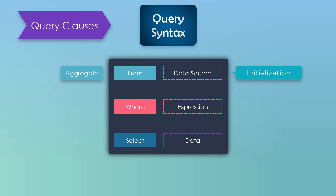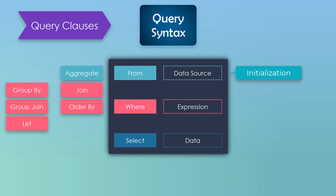The second part can be where, or also one of the following clauses: group by, join, group join, order by, let. We can use one of them or all of them. Each clause can also be used more than once — for example, where twice or let ten times. These clauses represent the calculation of the query. There is no rule which clause should come first or in which order they must appear. It depends on what we want to do using the query, and we don't have to use these clauses if we don't need them.